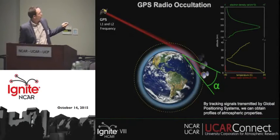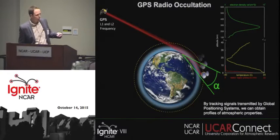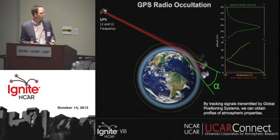This is the GPS radio occultation geometry. The LEO satellite receives the GPS signals, and we can measure this alpha bending angle. From there we can measure temperature and water vapor.